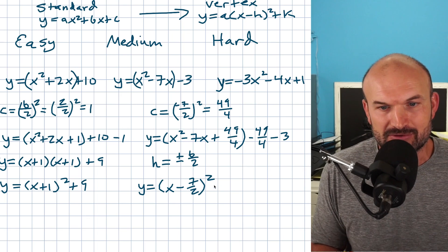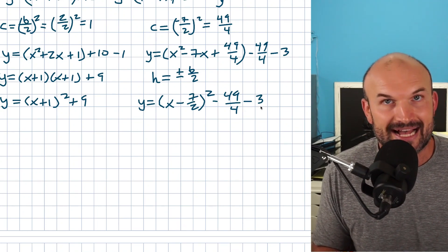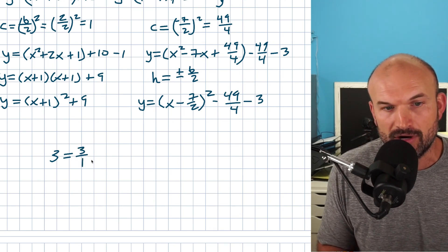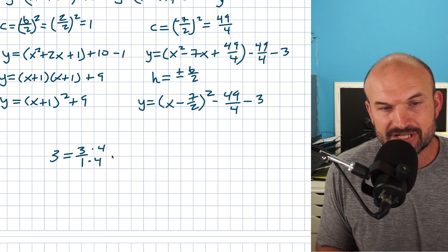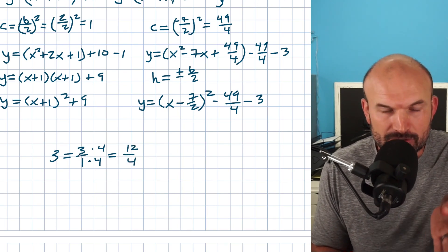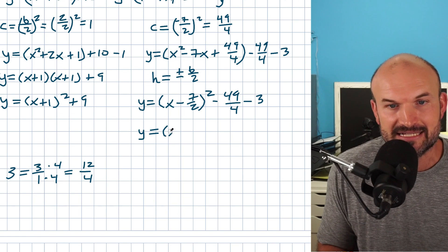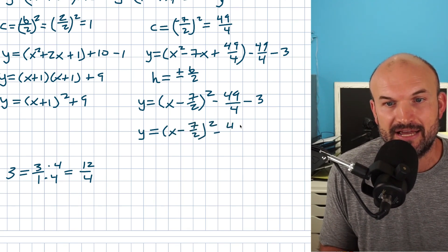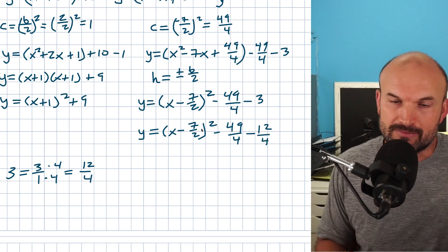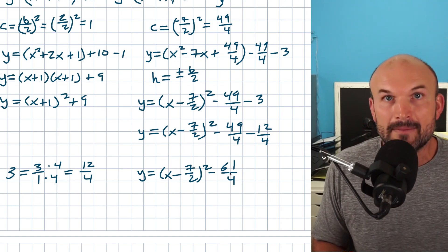Now how do we subtract a fraction from a whole number? The best way is to rewrite three as a fraction — three over one — then multiply by four over four to get the equivalent value 12 over four. Now I have x minus seven halves quantity squared, minus 49 over four, minus 12 over four. With the same denominators, I apply the operation to the numerators, giving negative 61 over four. Final answer: y equals x minus seven halves quantity squared minus 61 over four.